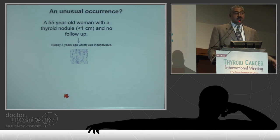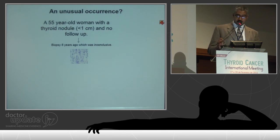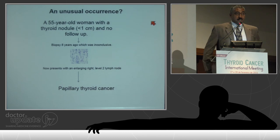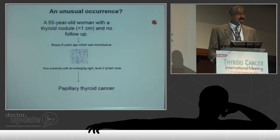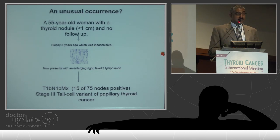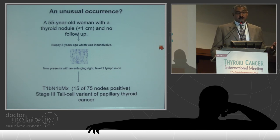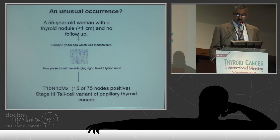I'll finish with an anecdote about why I'm concerned. A 55-year-old woman had a thyroid nodule less than one centimeter. They tried to biopsy it but the cytology was inconclusive. She didn't have follow-up, and eight years later developed a level two lymph node, which on biopsy was consistent with metastatic papillary thyroid cancer. She required a total thyroidectomy, bilateral central neck node dissection, and a right lateral neck dissection. Her histology was tall cell variant of papillary thyroid cancer. We could have observed this patient, but this emphasizes the point of knowing what you're dealing with and providing follow-up.